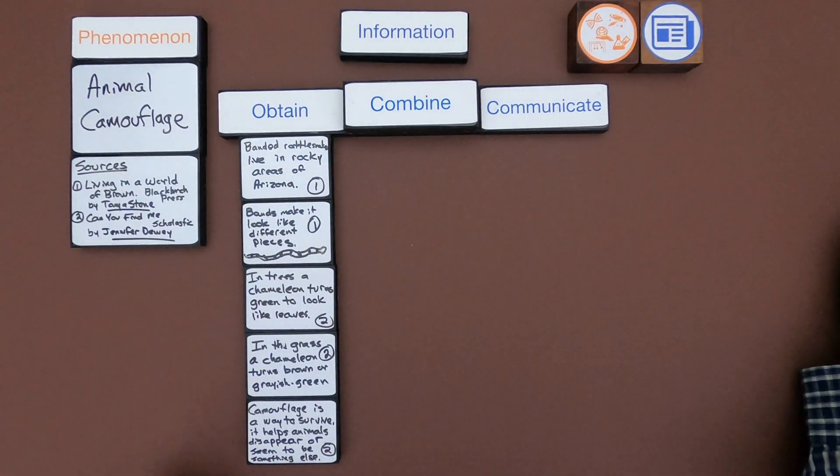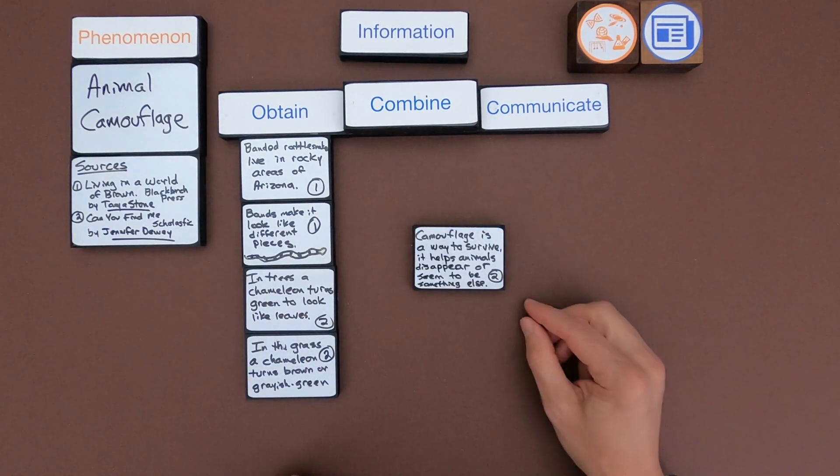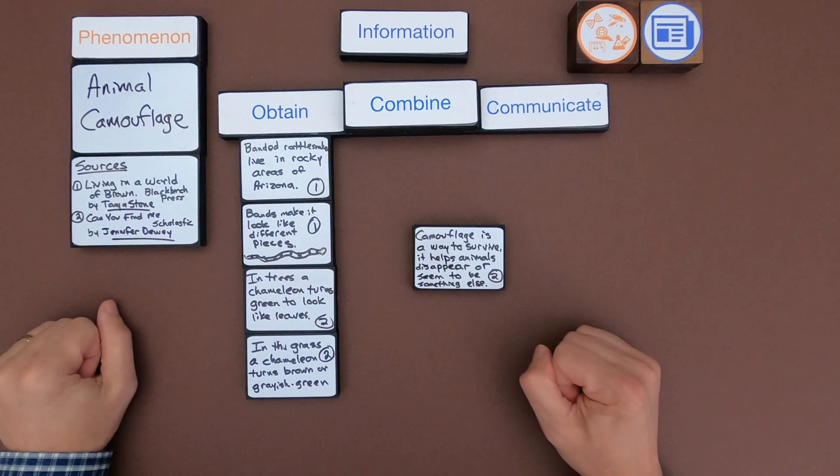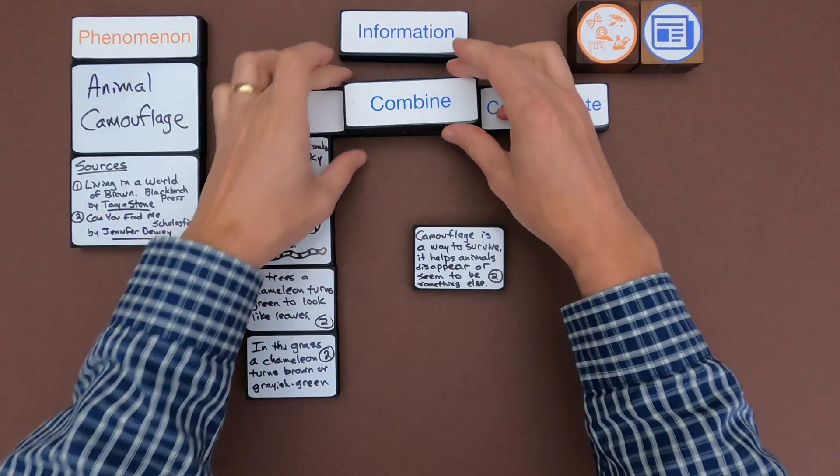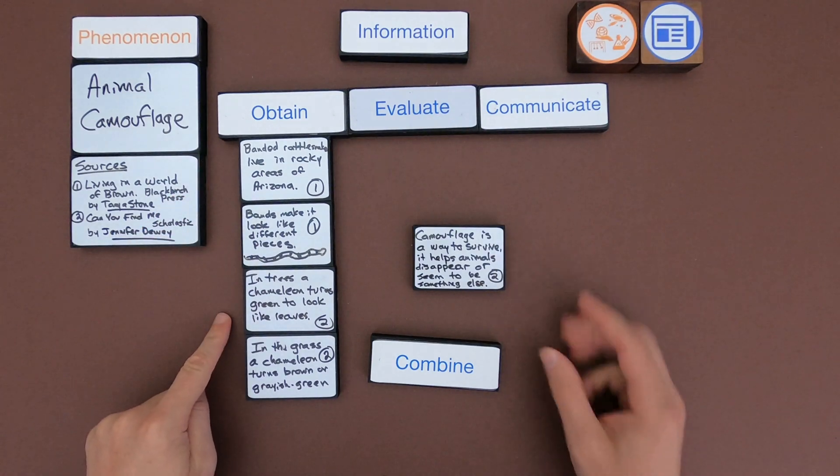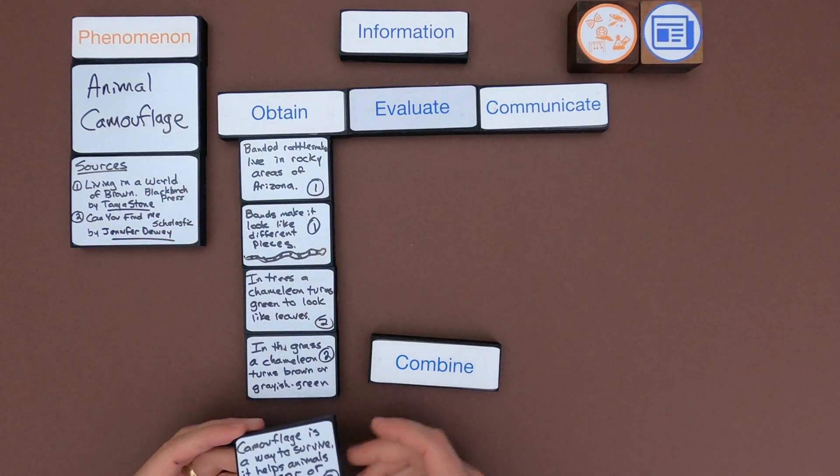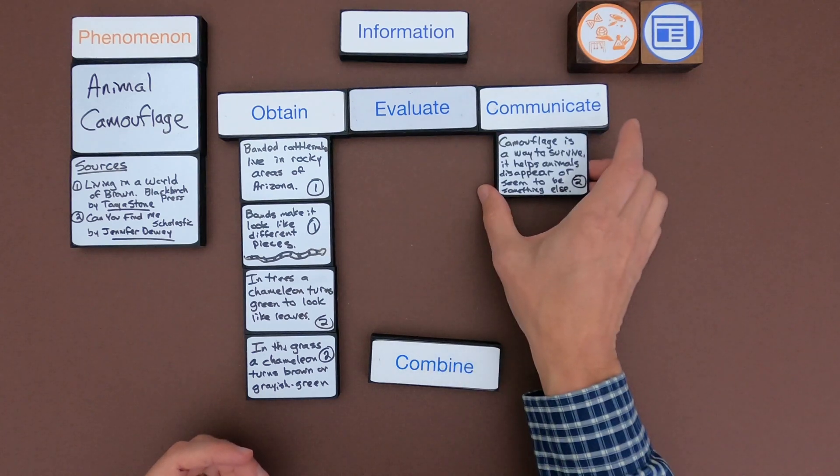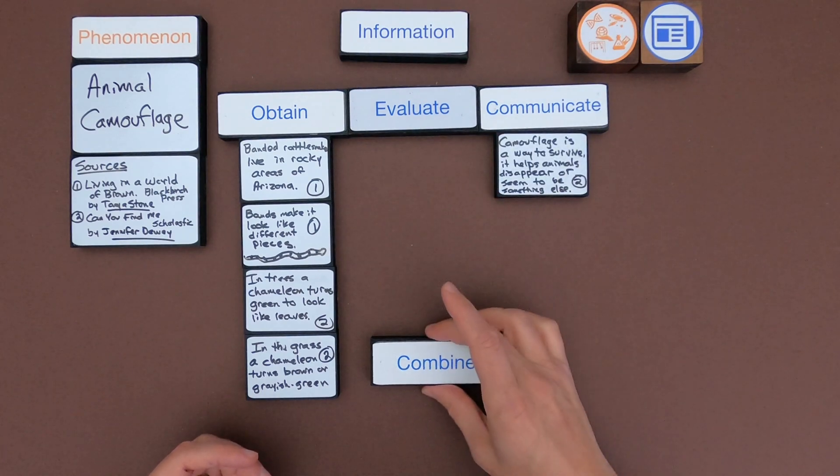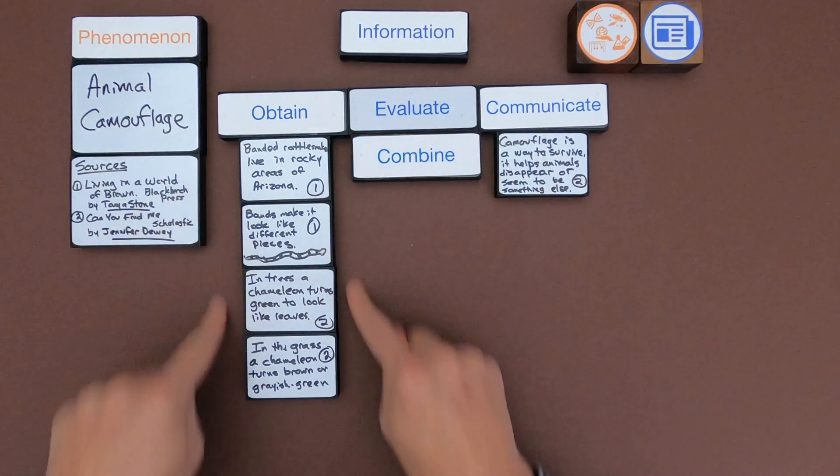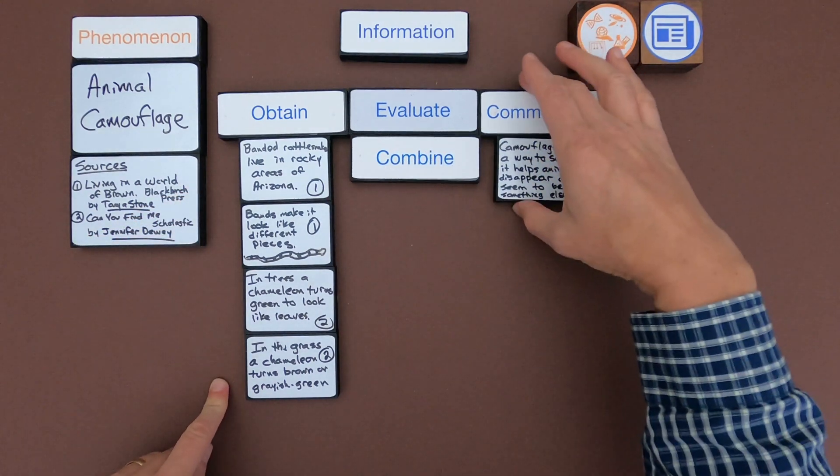But if I look back at the phenomena remember I really want this to be about animal camouflage and these are really just different types of camouflage so it would be great if I could get a definition for what that is. Okay so what I wrote here is camouflage is a way to survive. It helps animals disappear or seem to be something else. And so this is from that second source, Can You Find Me? And so what I've been doing now is I'm really starting to evaluate the evidence that I have. And so I think this is really important, this idea of what camouflage is. If I'm communicating that I'd probably start with that.